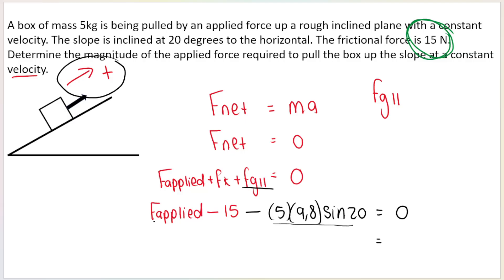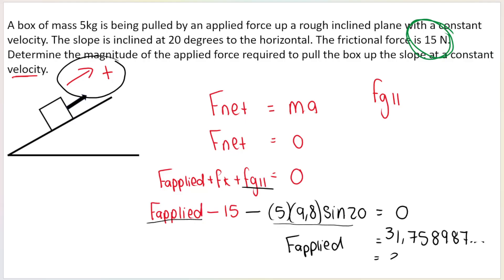Adding those together gives F applied equals 31.76 Newtons. They asked for magnitude, which means I don't need to give a direction. Important teacher tip: if they don't say magnitude — if they say determine the applied force — you must give a direction or the answer will be marked wrong.